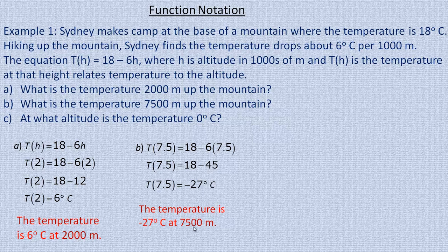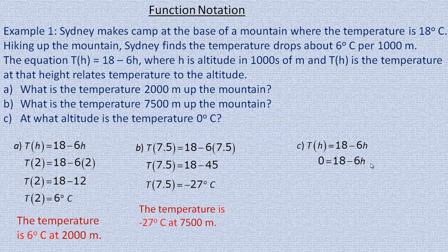That's starting to be pretty high up, which is why it's quite cold. For the last question: at what altitude is the temperature 0 degrees? In this case, we're not asked to find the temperature at a certain height — we're asked to find the height at which the temperature is 0. So that 0 goes in place of t of h, not in place of h, because it's the temperature.